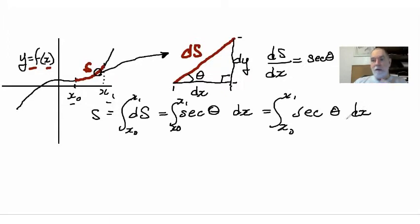Now our problem in integrating this side of the equation is that we have a function in terms of theta, but we're integrating in terms of x. So we need to convert this secant theta function into something in terms of y and x, and we'll do that by squaring the secant and then taking the square root.